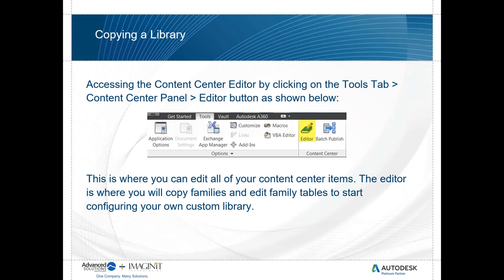What I want to talk about now is copying a library. Copying a library is what I referred to when I said I could take existing information, copy it to my custom location, and then start modifying it. I recommend doing this without anything open. First, have your project set up and your vault set up, then from your Tools tab, where the Application Options are, there's a Content Center area with an editor option. In the editor, I can copy information from the stock libraries into the custom libraries.